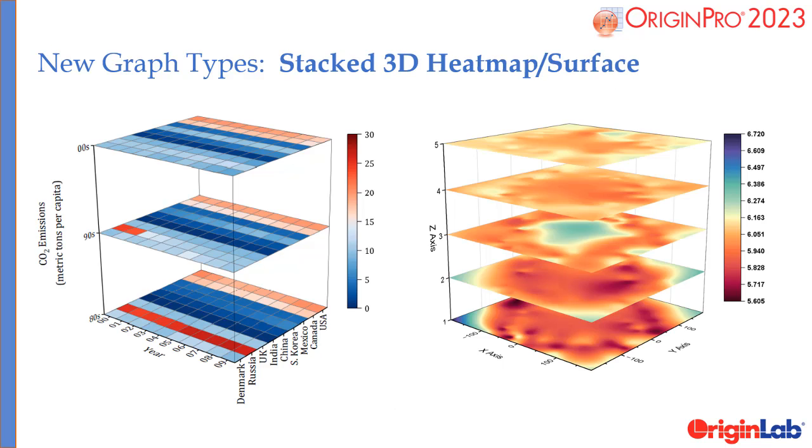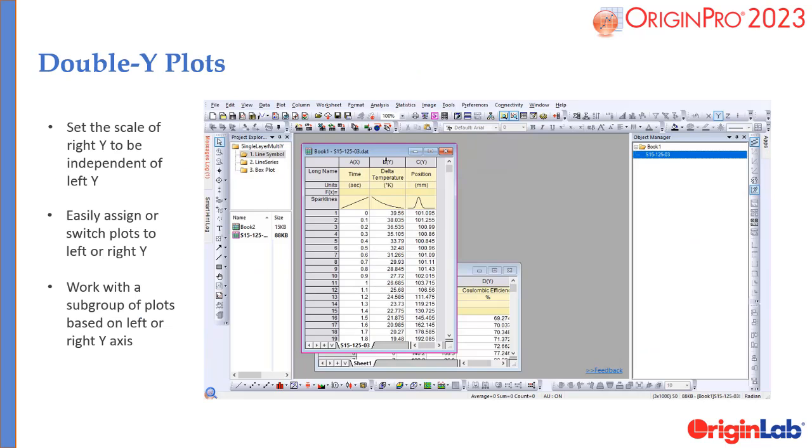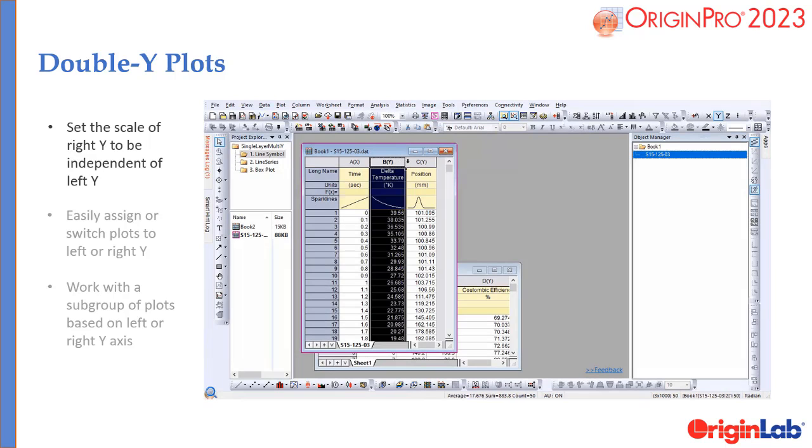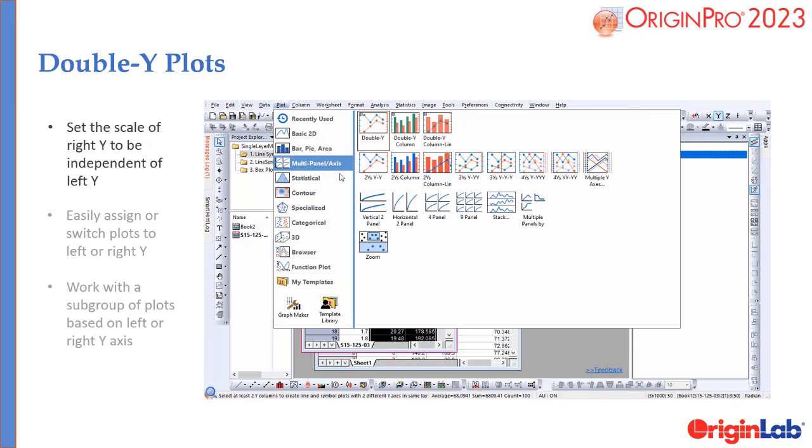Stacked 3D heat maps and a new way to create 3D stacked surface plots. 2023 supports plotting double Y-graphs in a single layer, allowing easier manipulation and analysis of plotted data. Set the scale of right Y to be independent of left Y.